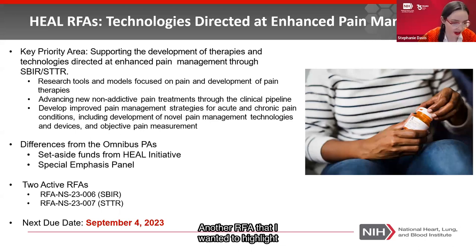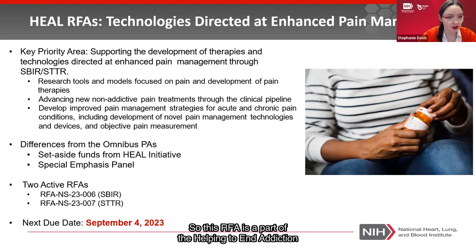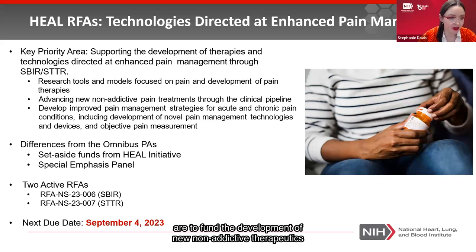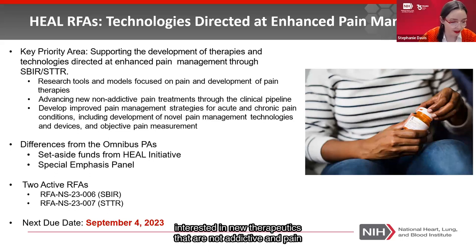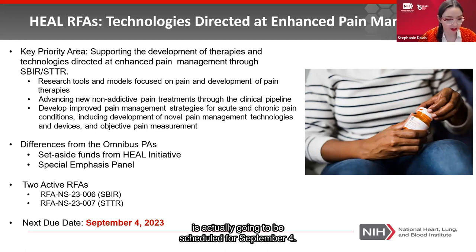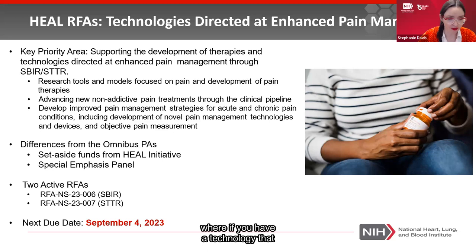Another RFA I wanted to highlight is the HEAL RFA, part of the Helping End Addiction Long-Term Program. The goal of both the SBIR and STTR RFAs is to fund the development of new non-addictive therapeutics and pain management strategies. The NHLBI is interested in non-addictive therapeutics and pain management strategies for patients who have heart, lung, blood, or sleep conditions. The next due date for this one is scheduled for September 4th, but since September 4th falls on Labor Day, it will actually be September 5th. If you have a technology that falls within the scope of this RFA, I would strongly recommend applying.